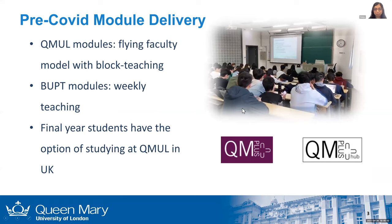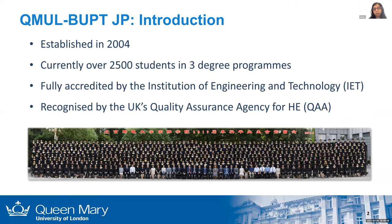Our program was established in 2004, so we've been running it for a number of years. Currently we've got over 2,500 students in total across three degree programs — all BSc engineering programs in telecoms, Internet of Things, and also e-commerce engineering with law. We've got 680 students in one cohort and it's a four-year degree program. Our programs are fully accredited by the Institution of Engineering and Technology, the IET — the same institution that accredits the programs we run back in the UK.